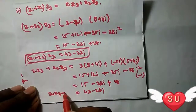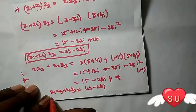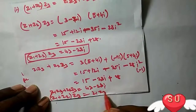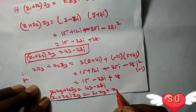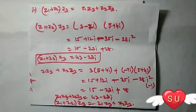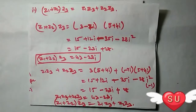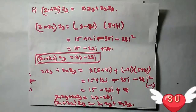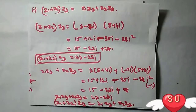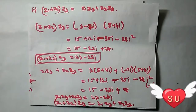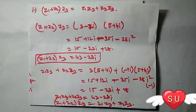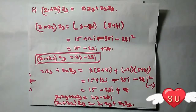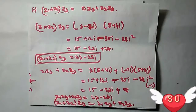So Z1 times Z2 plus Z3 equals Z1·Z2 plus Z1·Z3, and both sides equal 43 minus 23i. Hence proved. Friends, this problem is easy. If you have any doubt, please ask in the comments. Thank you so much for joining us and we'll see you in the next video.